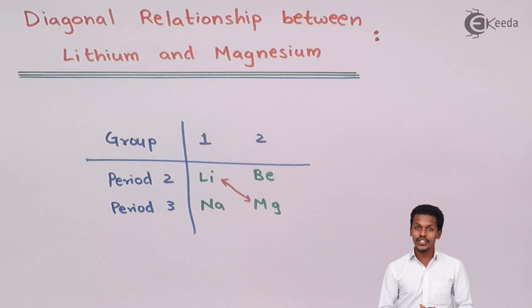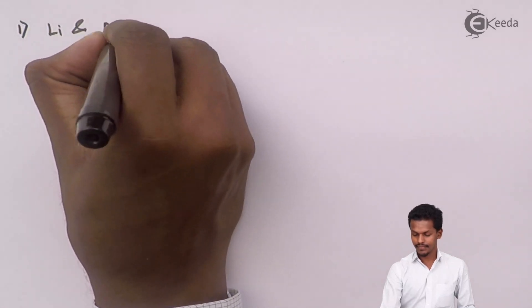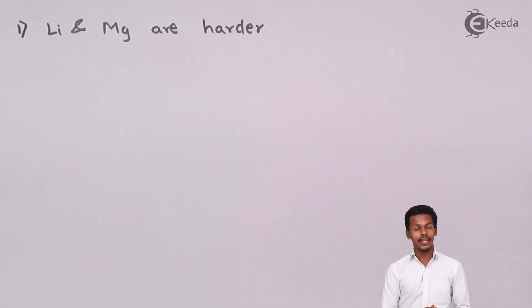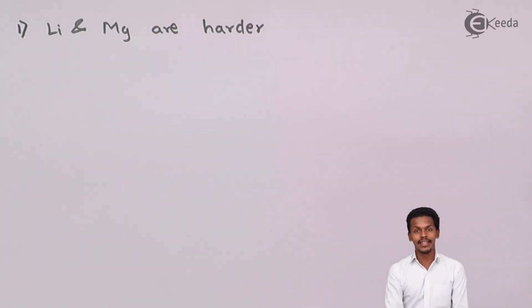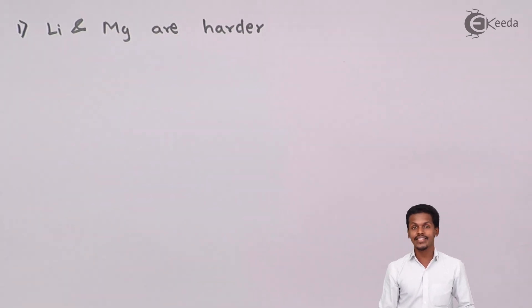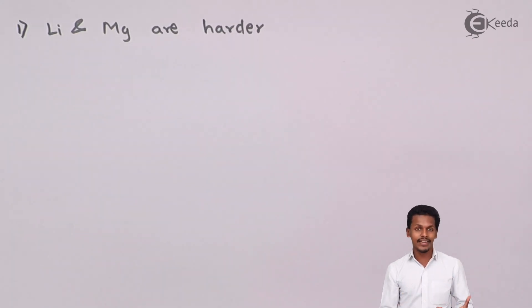The first point is that lithium and magnesium are harder in nature. As we know from the anomalous behavior of lithium, since lithium is the smallest element in group 1, its atomic size makes it harder. This hardness property of lithium, which is different from the other elements in group 1, is very similar to that of magnesium. So therefore, lithium and magnesium are both harder in nature.